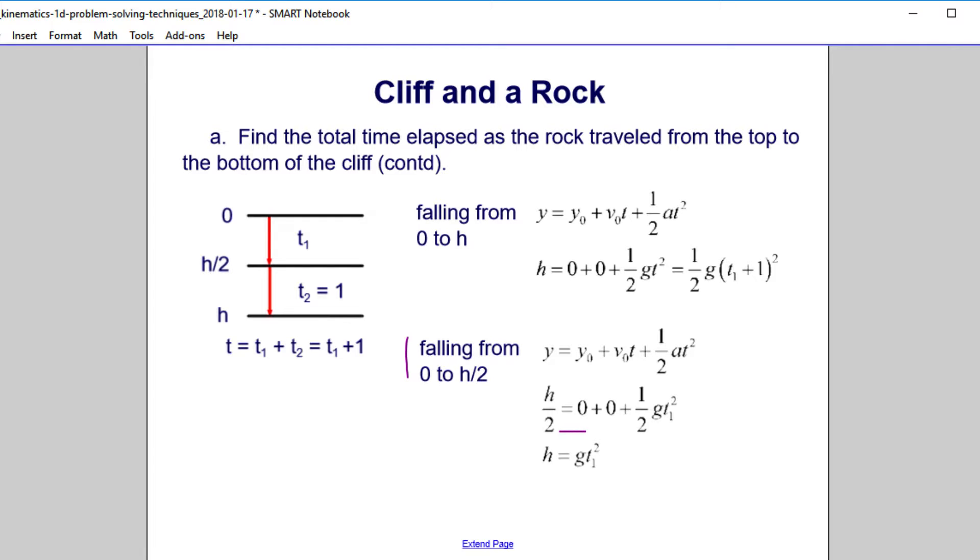And let me just erase so I can point out what they are. And here's one equation. h is g t1 squared. And over here, we have h is equal to 1 half g, parentheses, t1 plus 1 squared. So what do you think we're going to do next? Yep. Set those two guys equal to each other.